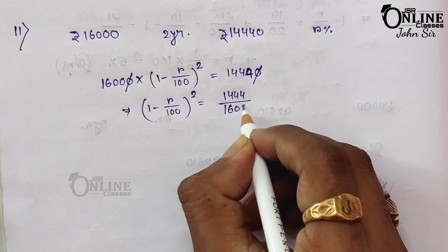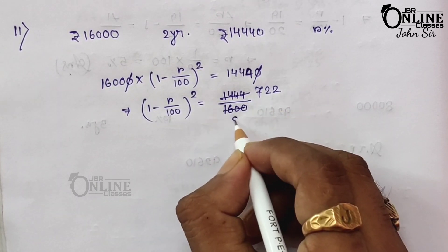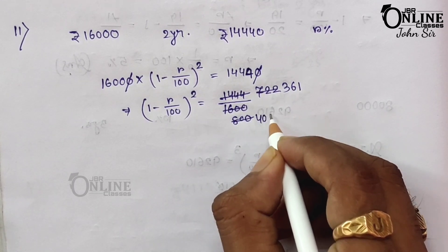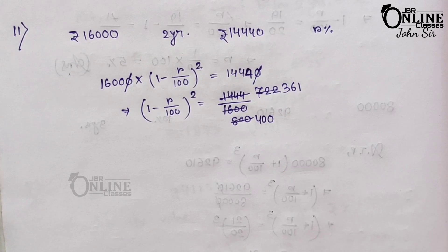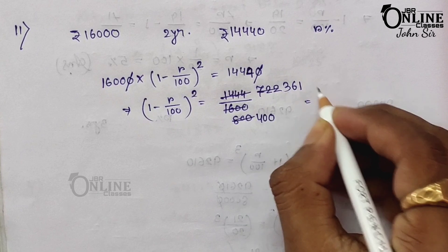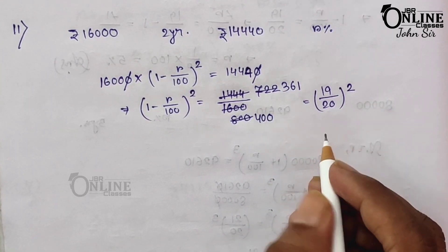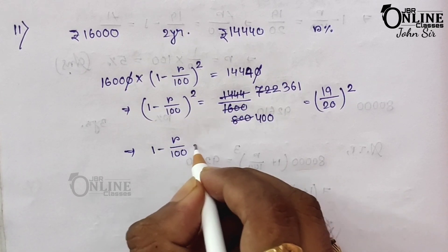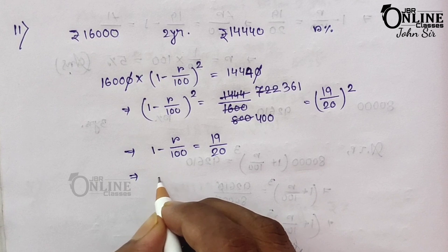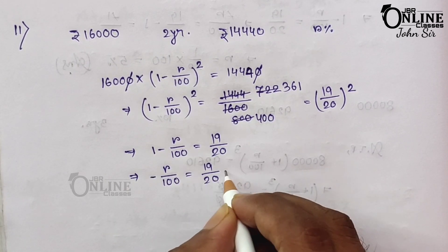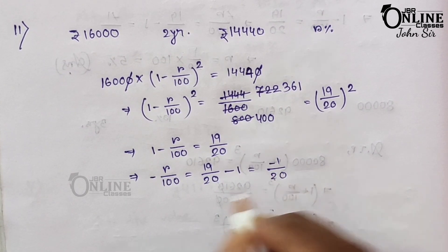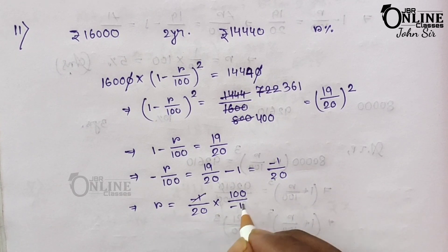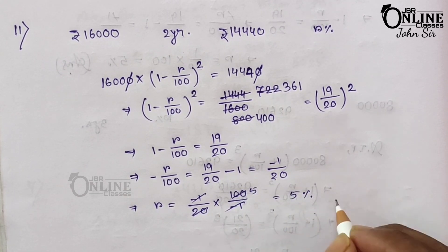Simplifying 1440/1600: divide both by 2 → 722/800, then again → 361/400. So (1 − r/100)² = 361/400 = (19/20)². By comparing both sides: 1 − r/100 = 19/20, so −r/100 = 19/20 − 1 = −1/20. Therefore r = (1/20) × 100 = 5 percent as your answer.